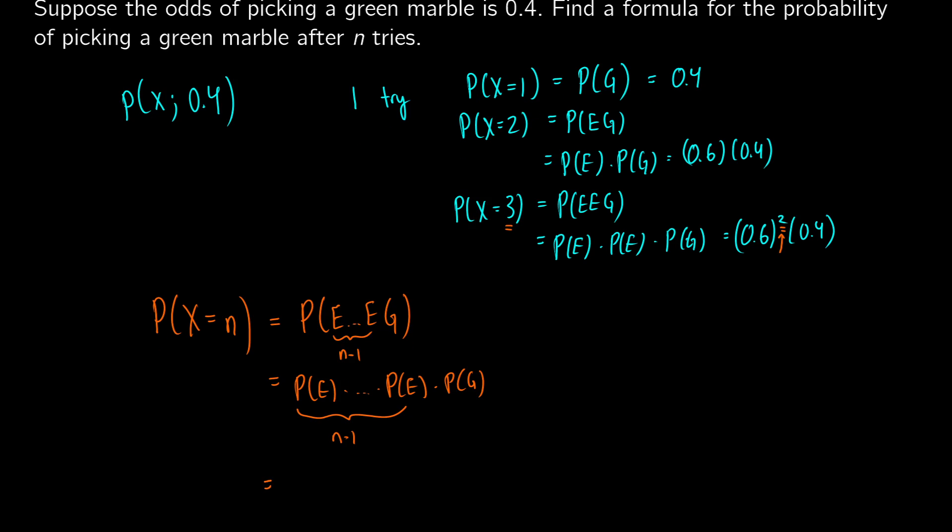In this case, we're going to get 0.6 to the n minus 1 times 0.4, sticking in our probabilities. This would be our formula for figuring out the probability of picking a green marble after n tries, and this can be generalized.